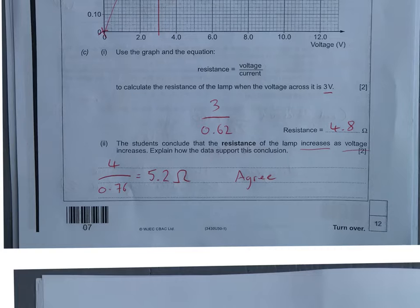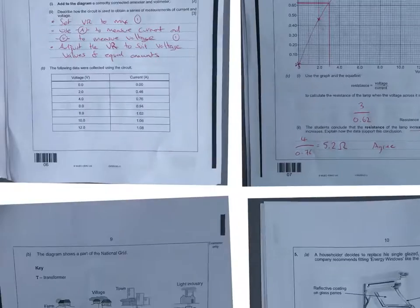4.8 is what you get for resistance if you put it over 0.62. Another student concludes that resistance of the lamp increases as the voltage increases. Well, let's check that. I'm going to increase the voltage from three to four.